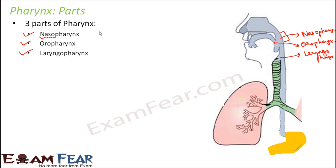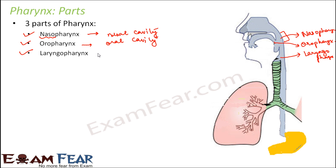So the nasopharynx connects to the nasal cavity, where air enters it. The oropharynx is associated with the oral cavity. And the laryngopharynx is below the oropharynx and connects the throat to the esophagus. So the pharynx as a whole connects the throat to the esophagus — that is its purpose.